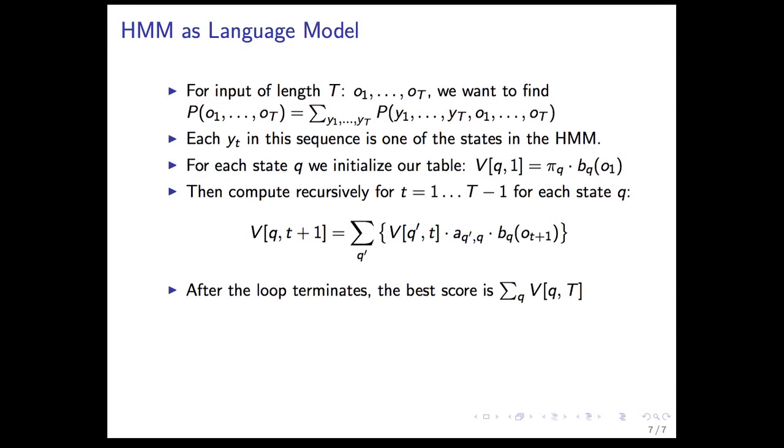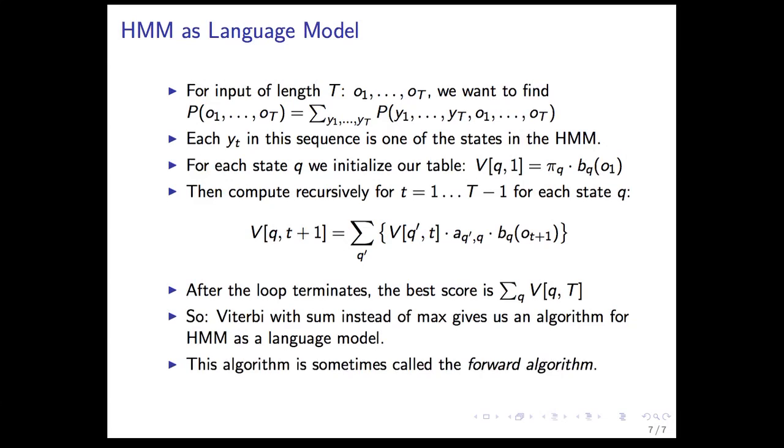After the loop terminates, the best score is the sum of all the states in the last time interval, capital T. So Viterbi with sum instead of max gives us an algorithm for HMM as a language model. This algorithm is sometimes called the forward algorithm.